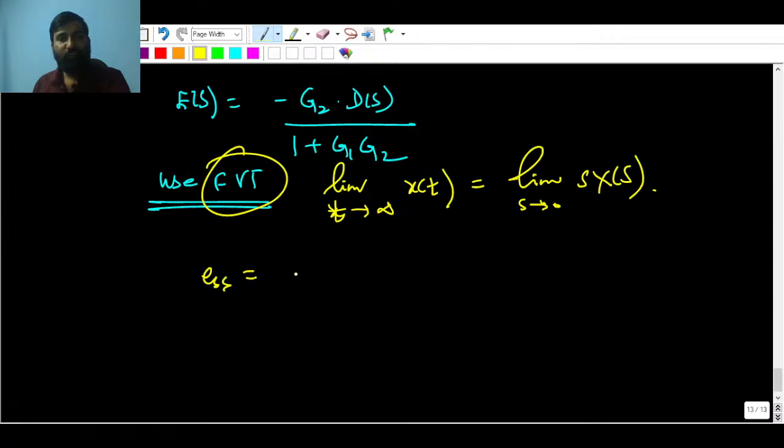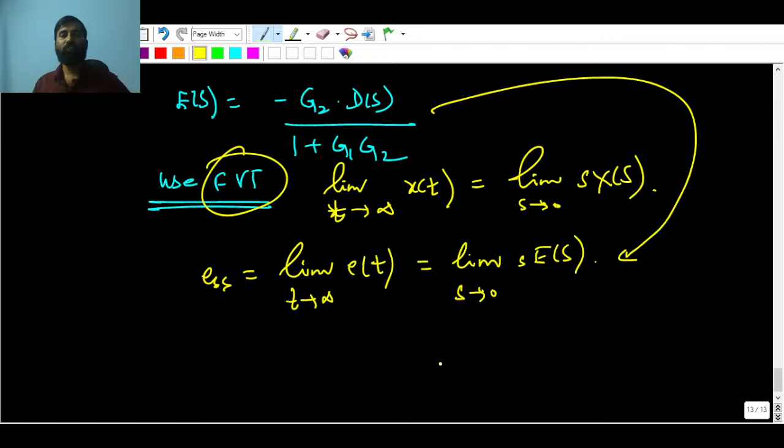Now you can say that e_ss is going to be limit t tending to infinity e(t), because e(t) is going to be what? Limit s tending to 0, s times. Now you can plug this expression what you have found out for steady state error, that is E(s). Moving forward, limit s tending to 0, s times, there is -G2, G2(s) that is right, remember, and this is D(s)/(1 + G1·G2), that is the loop gain G1 and G2.